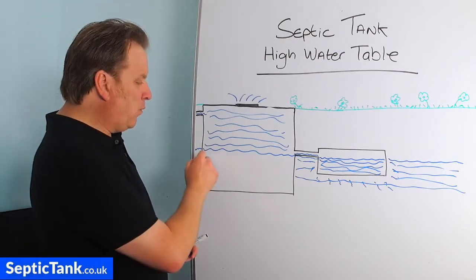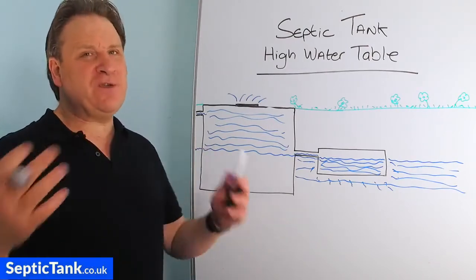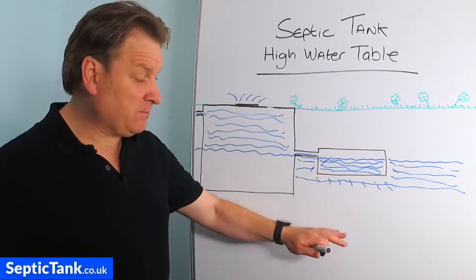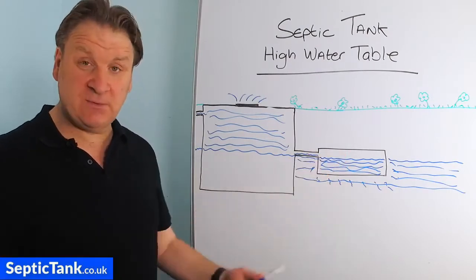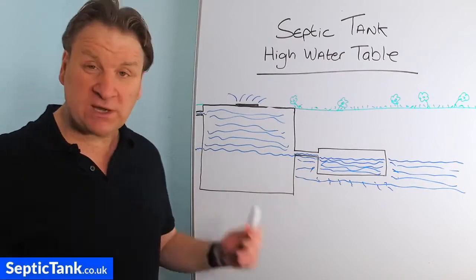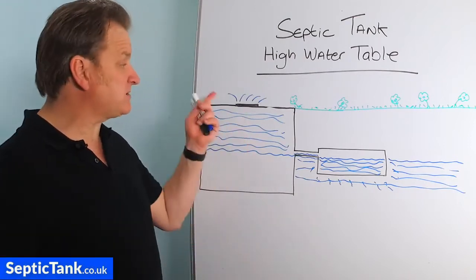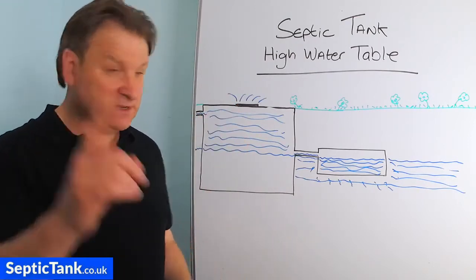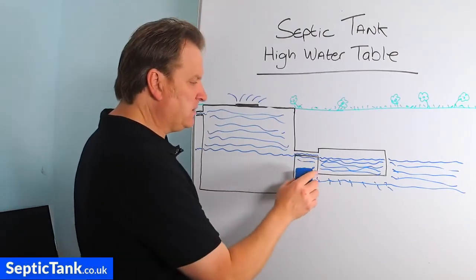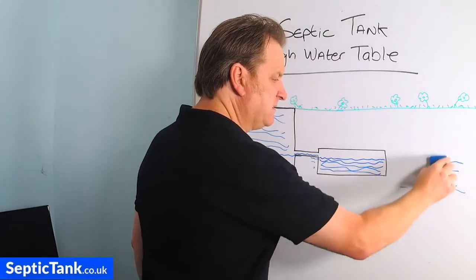That's typically what happens if you live in an area with a high water table, or if it's rained a lot and the water table - which may have been lower - rises in the winter. That's the problem associated with having a high water table. Many people ring me up and say their water is not soaking away and is overflowing onto the grass, asking what they can do. So I'm going to show you two really simple solutions.